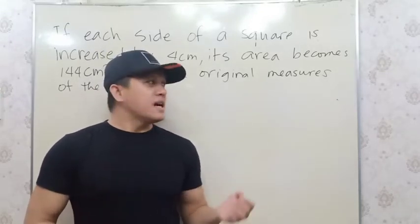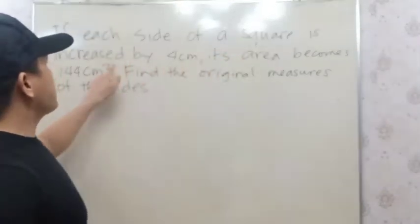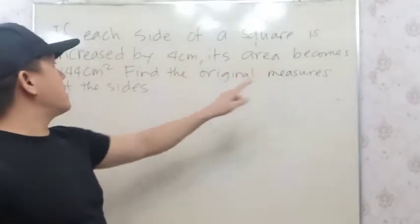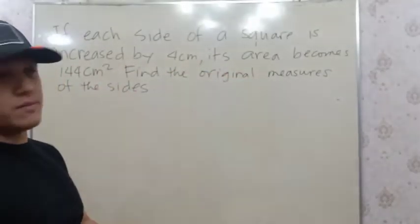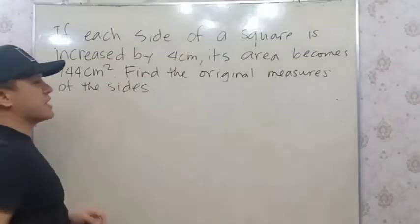So I'll be explaining this one. Let's start. If each side of a square is increased by 4 cm, its area becomes 144 square cm. Find the original measures of the sides.